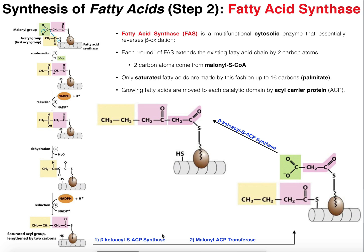We have this four-carbon chain attached to the acyl carrier protein. We have to transfer this four-carbon fragment from the acyl carrier protein's sulfur down to the thiol of KS — beta-ketoacyl-ACP synthase. So beta-ketoacyl-ACP synthase transfers this growing fatty acid chain, now four carbons, to its sulfur. In the product, the four-carbon fragment is now attached to this sulfur, which is part of KS.